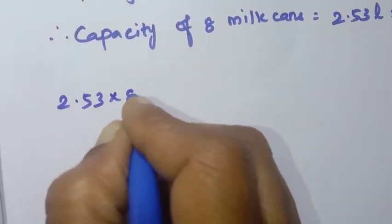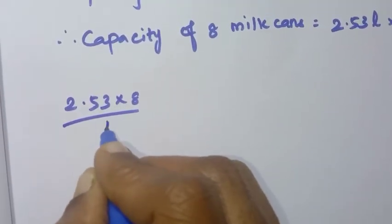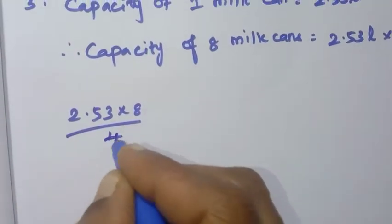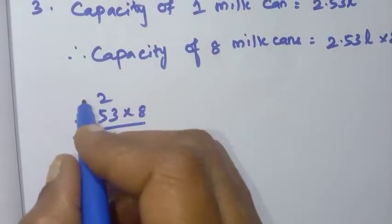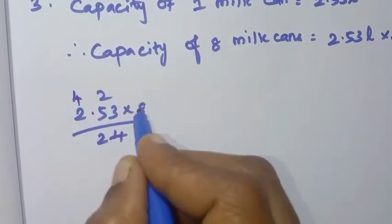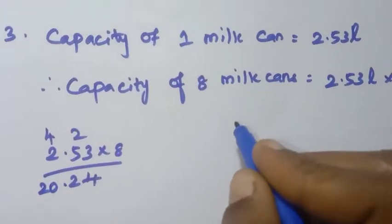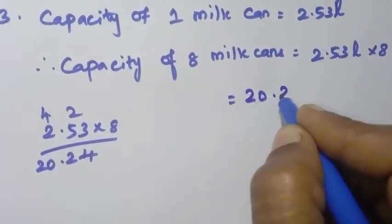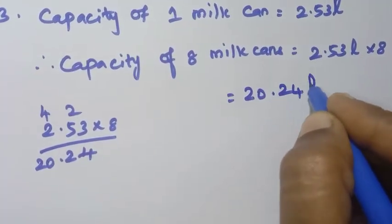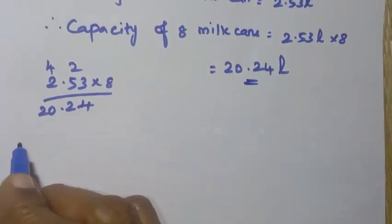Now we do the multiplication: 8 × 3 = 24, 8 × 5 = 40 plus 2 = 42, 8 × 2 = 16 plus 4 = 20. Therefore the capacity of 8 milk cans is 20.24 litres. This is the answer.